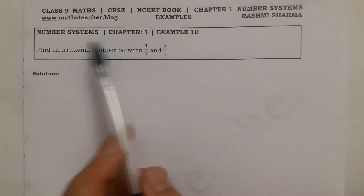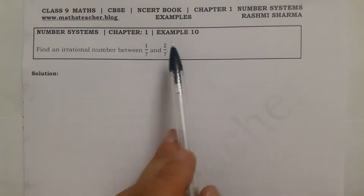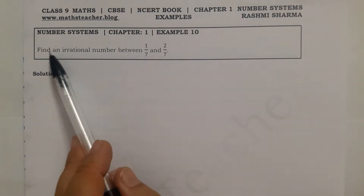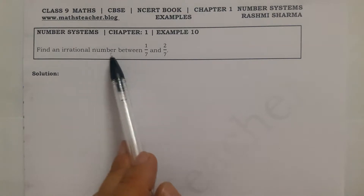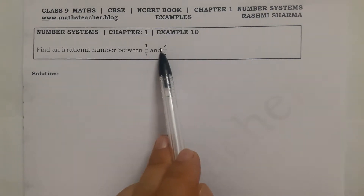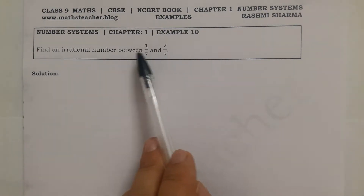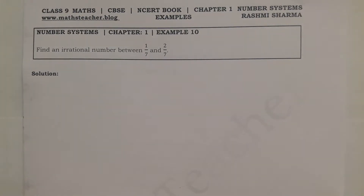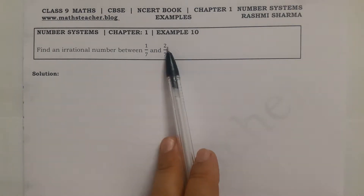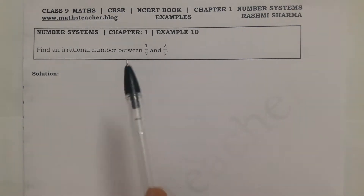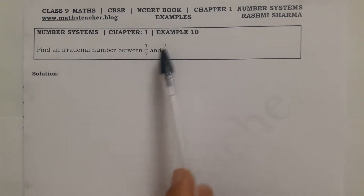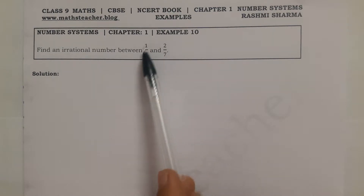In this video we are going to solve Chapter 1, Number System, Example number 10: find an irrational number between 1/7 and 2/7. We have two rational numbers given, because these are in the form p over q.